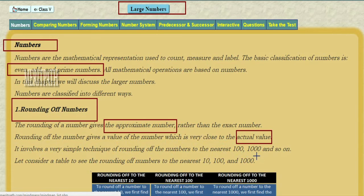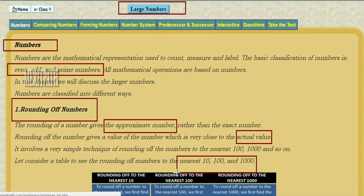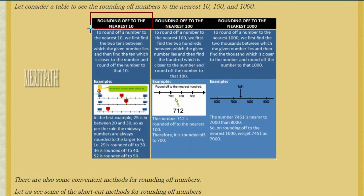Let us take some examples to find out the nearest values of 10, 100, and 1000. To round off a number to the nearest value of 10, first we need to find out the two 10s between which the number lies, then find the 10 which is closer to the number and round off the number to that 10.